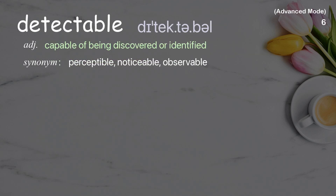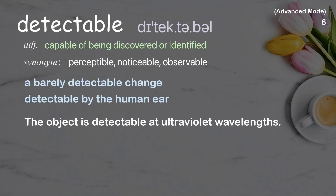Detectable: capable of being discovered or identified. Examples: a barely detectable change, detectable by the human ear. The object is detectable at ultraviolet wavelengths.